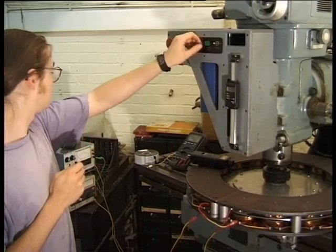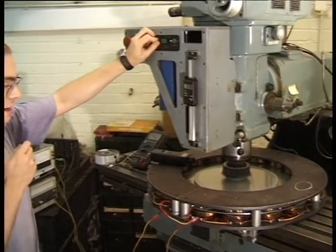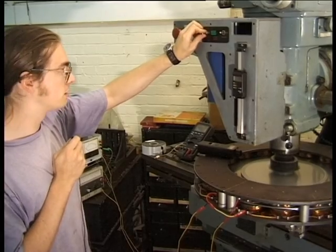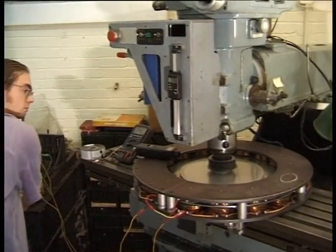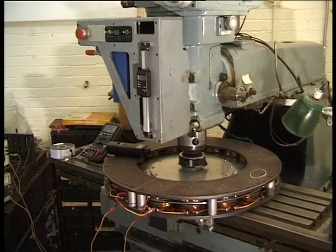I'm going to start the spindle. What you'll see is that the disc stops very quickly. So that was 5 kilowatt instantaneous at 1500 rpm.